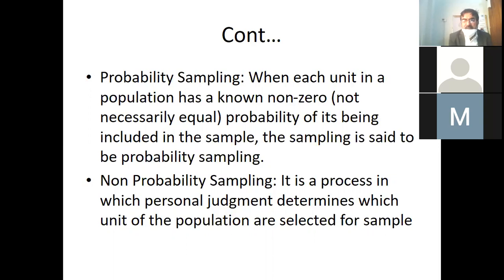Non-probability sampling is a process in which personal judgment determines which unit of the population are selected for the sample. For example, if you need diabetic patients, if you need students, if you need teachers.